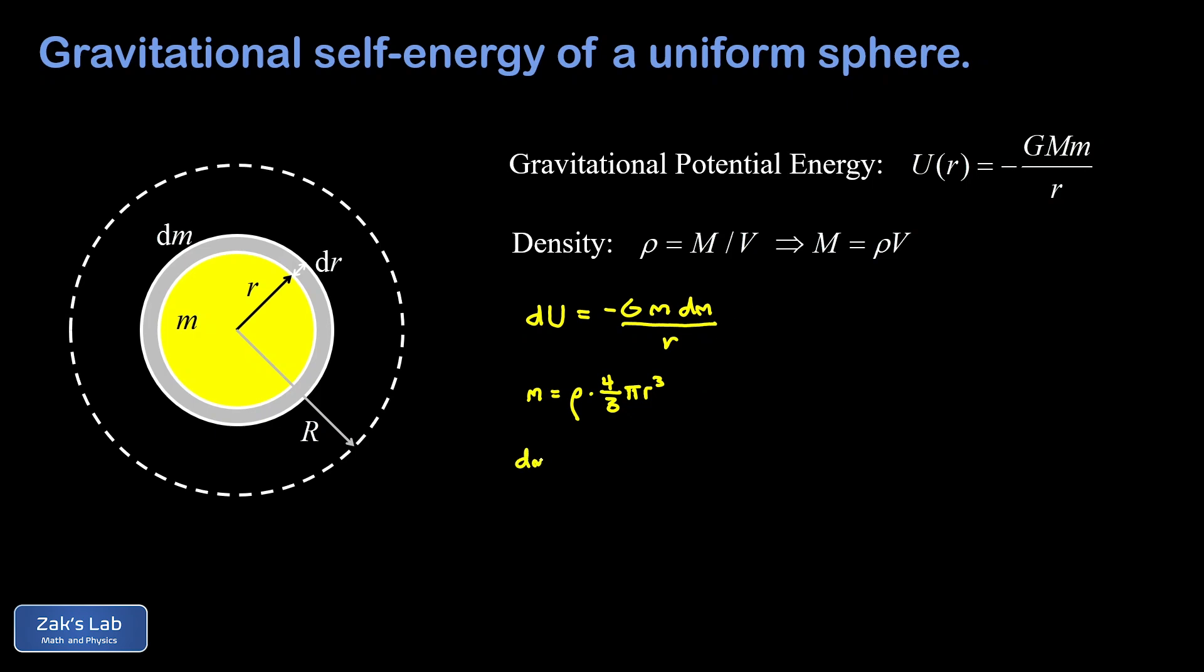Now what about dm? dm is a thin spherical shell. So I can still write the mass of that as density times volume, but the volume of a thin spherical shell is given by the surface area, 4 pi r squared, multiplied by the thickness, which we call dr.